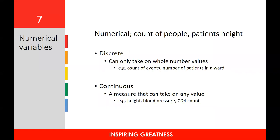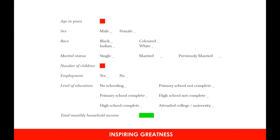Numerical variables are divided into two kinds: discrete, where the value can only take on a whole number — for example, the number of patients in a ward — and continuous, where the measurement can take on any value including fractions. In our sheet, the number of children and age can only be whole numbers, so they are discrete variables, while total monthly income can include rands and cents, making it continuous.